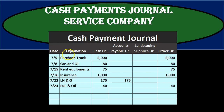The cash payment journal works best when transactions are similar throughout the time period. For a service company, something like purchasing supplies happens repeatedly, making this journal very effective. If we are always paying off something on account, then accounts payable is another typical type of transaction well-suited to this journal.